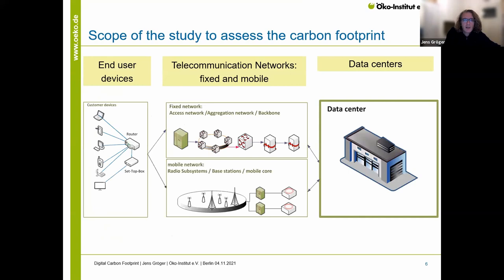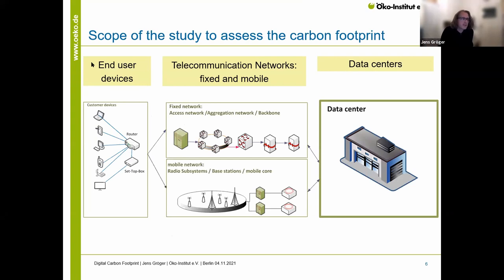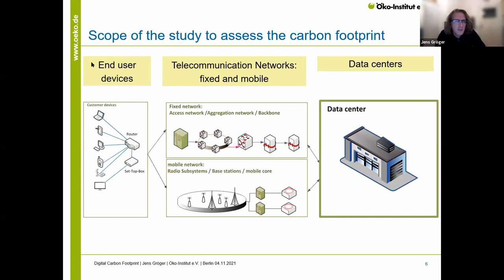Also in private households, we observe that televisions are already consuming as much as refrigerators. We are happy that we got flat screens and they get more and more efficient — efficiency meaning they consume less energy per square centimeter of screen. But unfortunately they get bigger and bigger, so right now these televisions really consume as much as refrigerators, which we thought were the really big consumers in households.